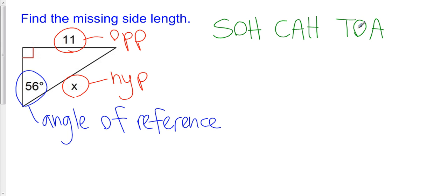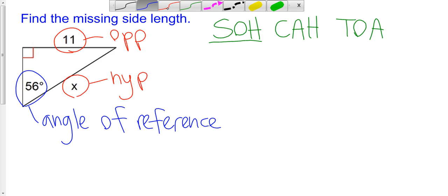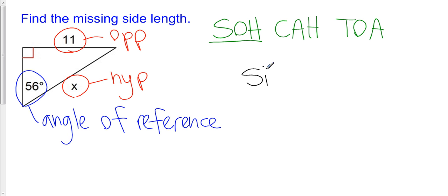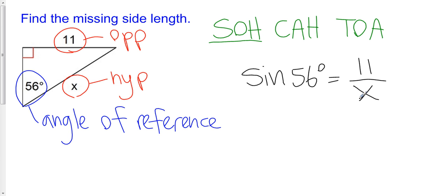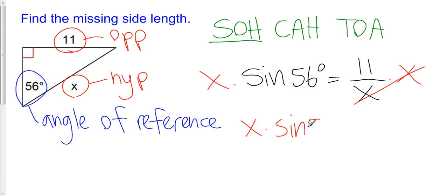Writing out SOH CAH TOA, I'm looking for the ratio that involves opposite and hypotenuse. There it is — OH, opposite and hypotenuse — we're talking about the sine function again. So I'm going to say that the sine of 56 degrees is equal to the opposite, which is 11, over the hypotenuse, which is x. This time I have x on the bottom, which complicates things. I need to multiply both sides by x to get x on top, giving me x times the sine of 56 degrees equals 11.